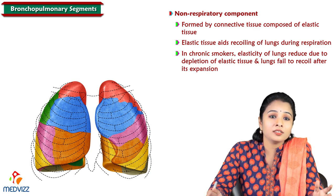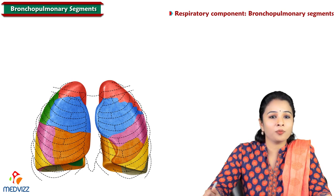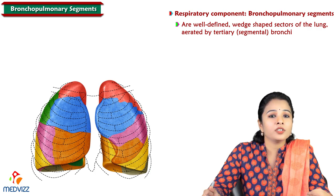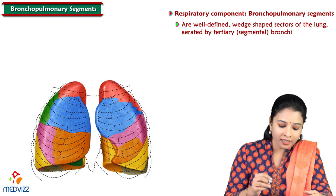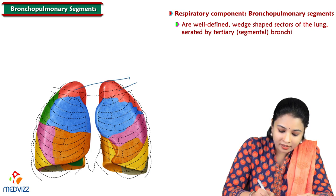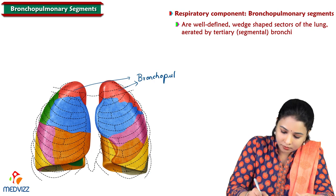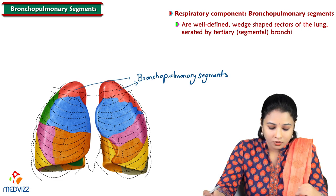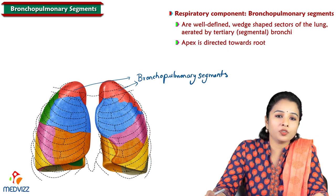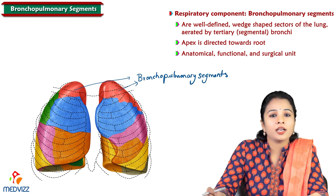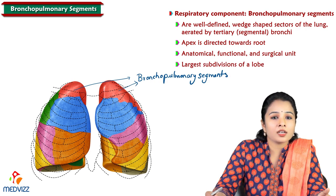Today's topic is on the respiratory component, that is bronchopulmonary segments. These bronchopulmonary segments are well-defined wedge-shaped sectors of the lung which are aerated by tertiary or segmental bronchi. The bronchopulmonary segment is the anatomical, functional, and surgical unit of the lungs, and these wedge-shaped segments are the largest subdivisions of the lobes.